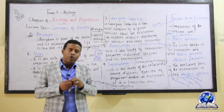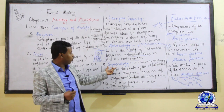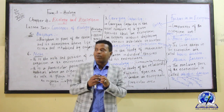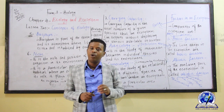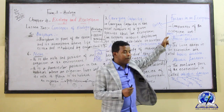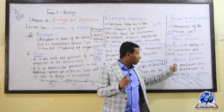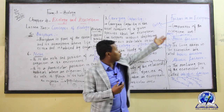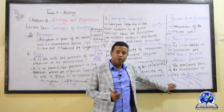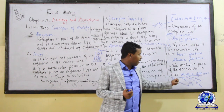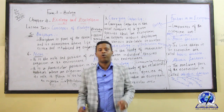To summarize: autecology and synecology are the two branches. Biotic factors include plants and animals. Abiotic factors include temperature, light, minerals, and air. These are the components and parties of the ecosystem.